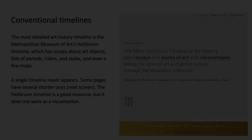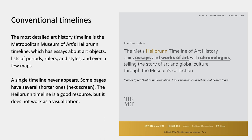Conventional timelines are always linear, but sometimes when they get too big, they don't all fit into one fold-out chart or onto one webpage. The biggest of all, I think, is the Metropolitan Museum of Art in New York City's Heilbrunn timeline, which is a permanent site they maintain. It has essays about objects, lists of periods, rulers, styles, and even a few maps. There's no single timeline here, but some pages have several shorter timelines.